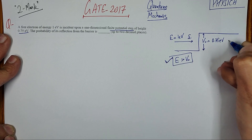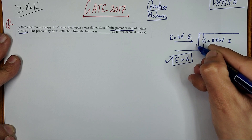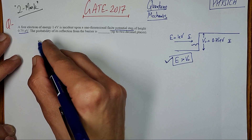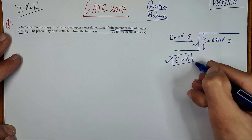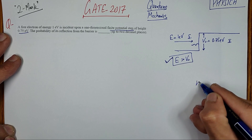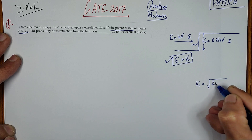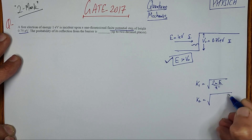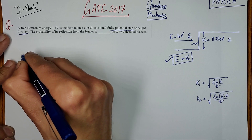We have two regions: region one and region two. To find the probability of reflection, we solve the Schrödinger equation in both regions. Since energy is greater than V0, the propagation constant in region one is k1 = sqrt(2mE / ℏ²) and in region two is k2 = sqrt(2m(E - V0) / ℏ²).